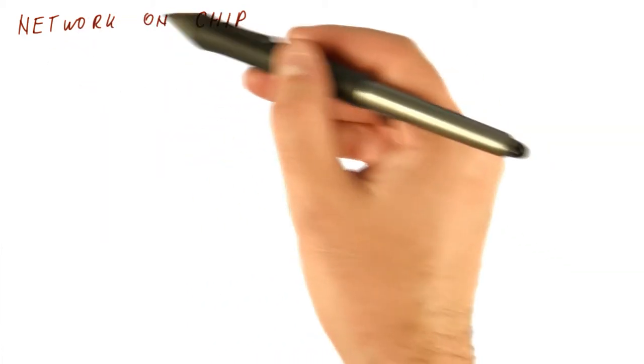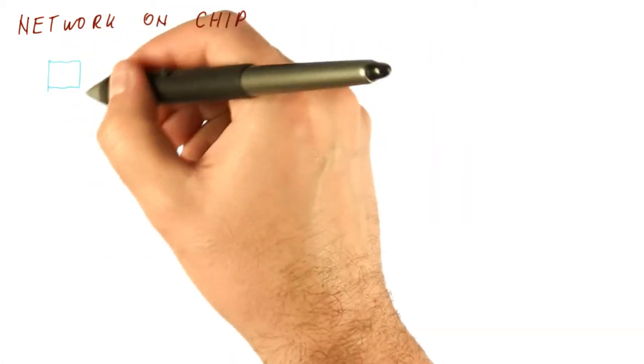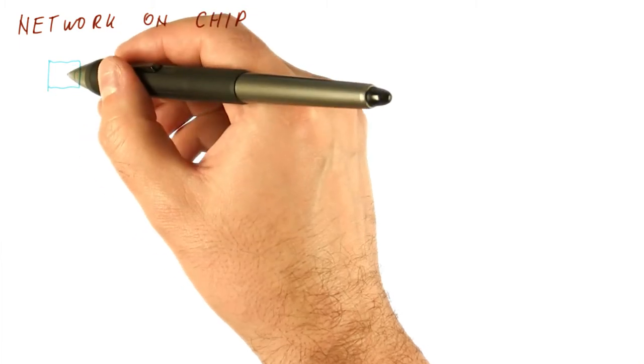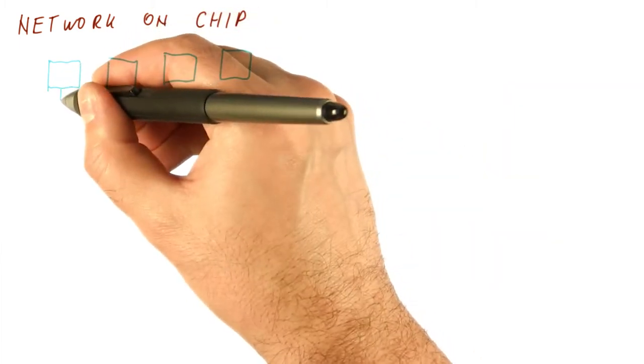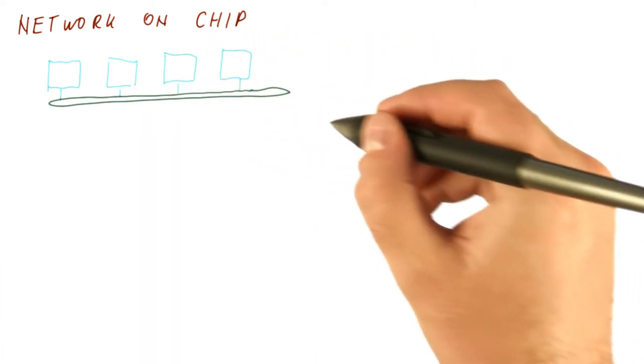So let's look at what a network on chip might look like. Let's say we have some sort of a squarish tile that has a core and maybe a level one cache. And such tiles normally will be connected to a shared bus.